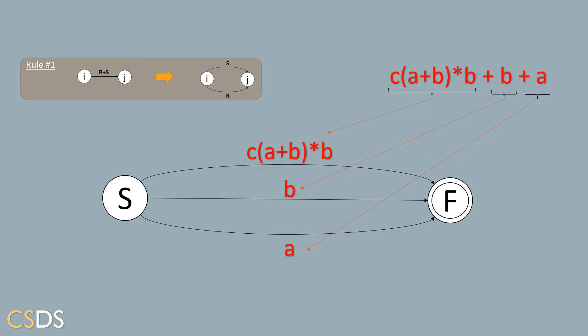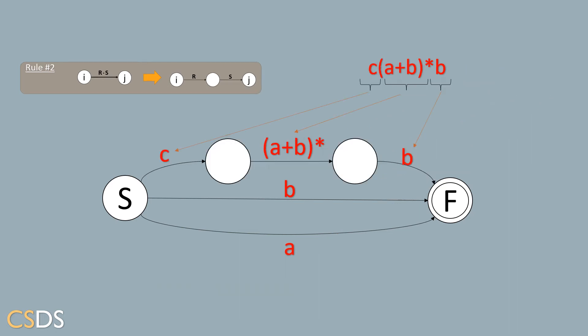And we will continue to break it down using rule number two. So after using rule number two, we now have three transitions instead of the topmost transition we had before.